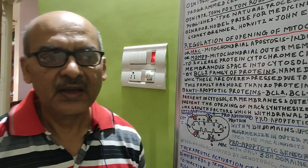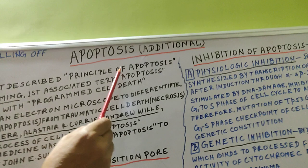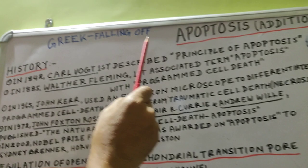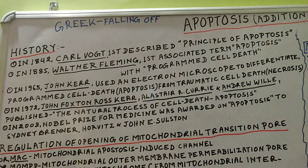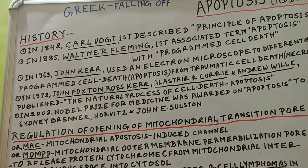The term apoptosis is a Greek word and it means 'falling off' — analogous to how old leaves fall down from trees. Similarly, aging cells in the body fall away after this process.